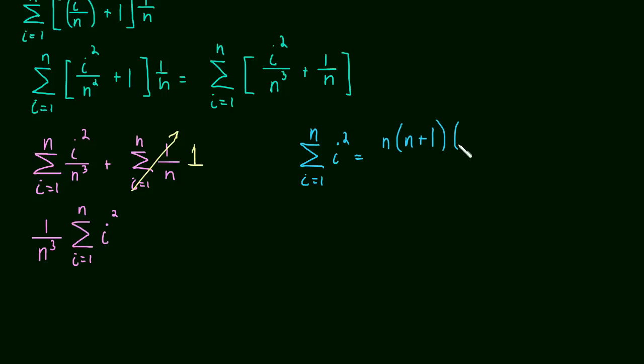assuming this is what you're talking about in class. So, it's n times n plus 1 times 2n plus 1 all over 6. Okay, so this becomes,